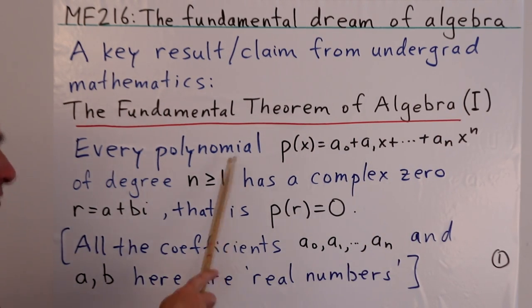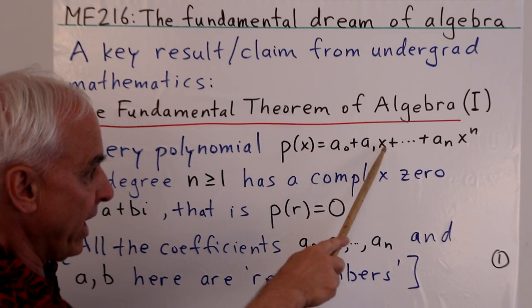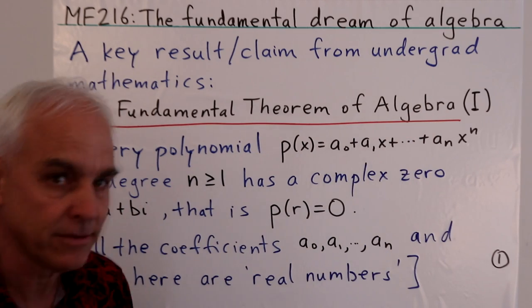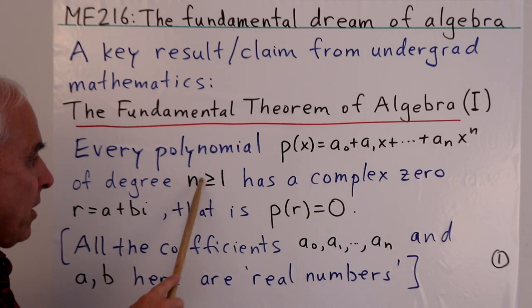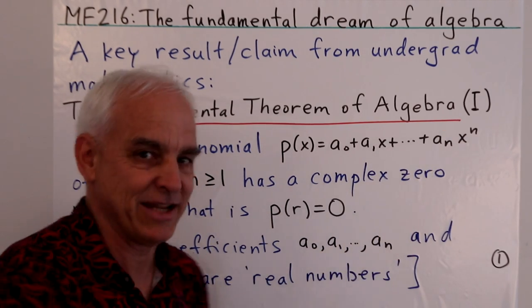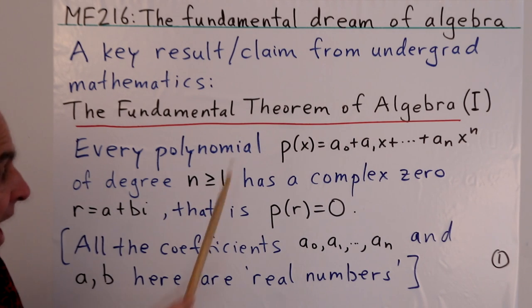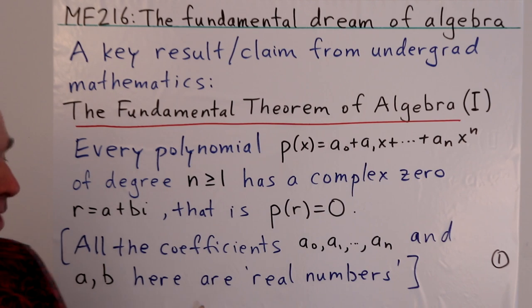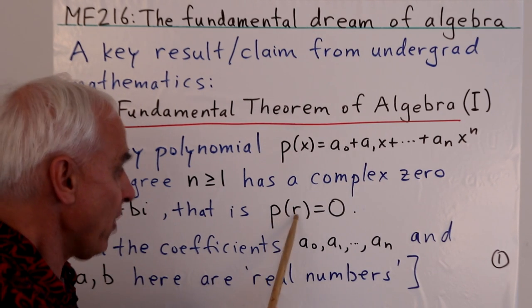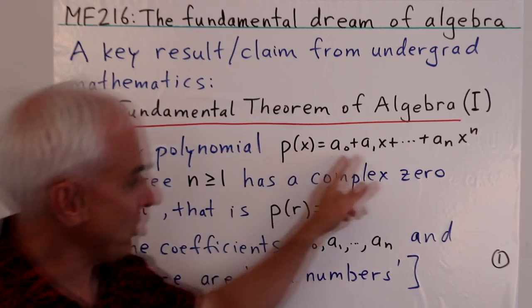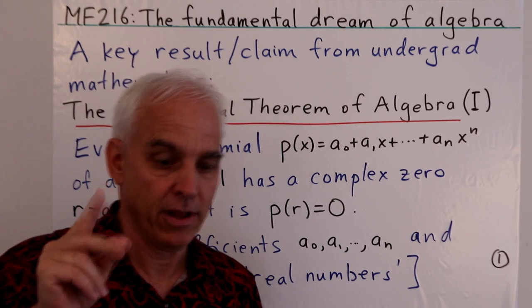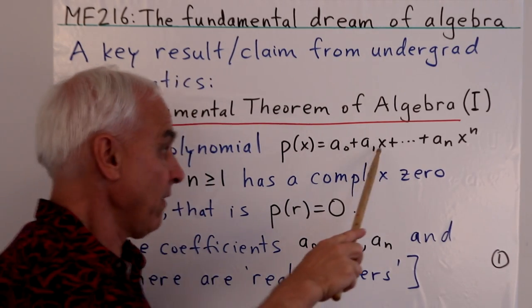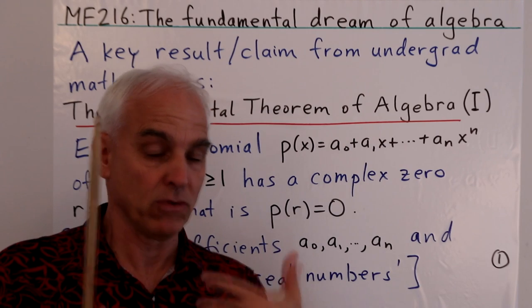Every polynomial p(x) = a_0 + a_1 x + ... + a_n x^n of degree n ≥ 1 has a complex zero r = a + bi. What does that mean? It means that p(r) = 0. So if you have a non-constant polynomial, then you can find a complex number, so that when you substitute that complex number in for x, then the total result is zero.